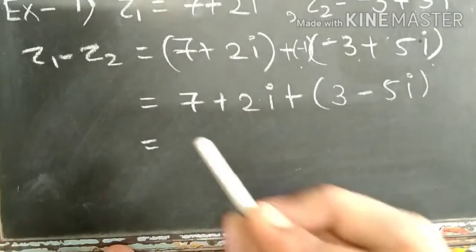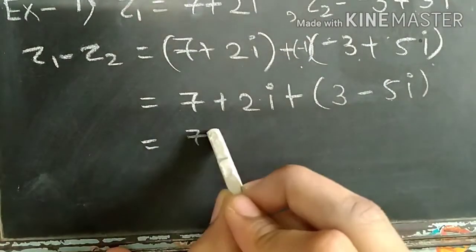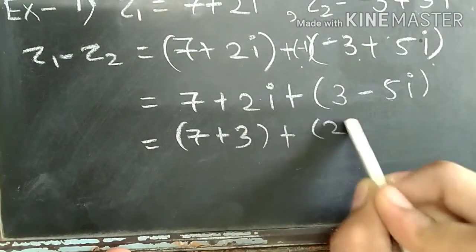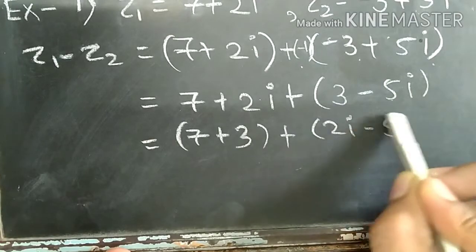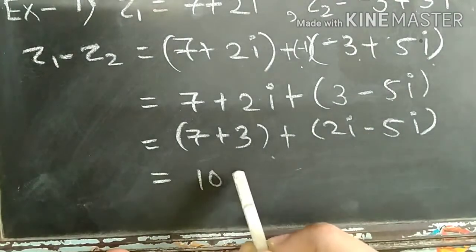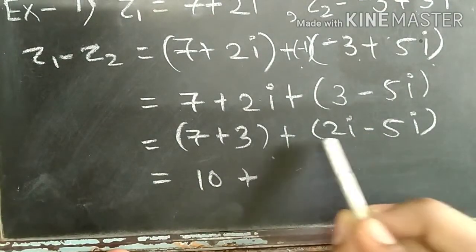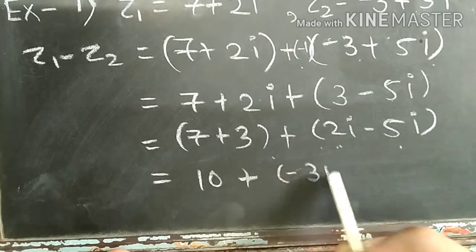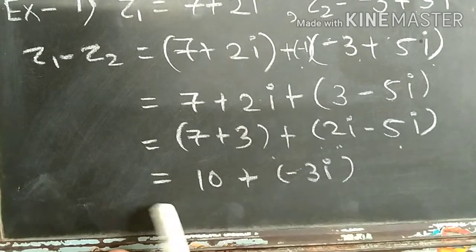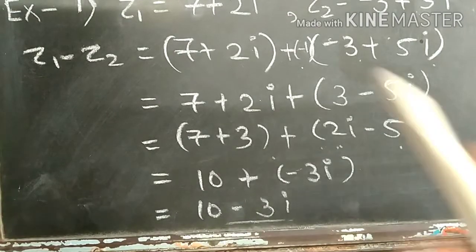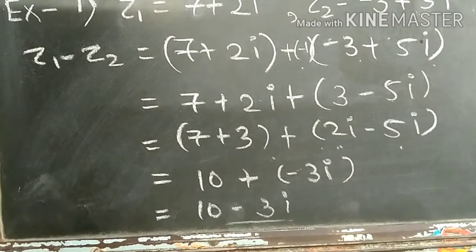Performing the subtraction: 7 plus 2i minus minus 3 plus 5i. We get 7 plus 3 for the real part and 2i minus 5i for the imaginary part. So 7 plus 3 is 10 and 2 minus 5 is minus 3, giving 10 minus 3i. This is the answer.